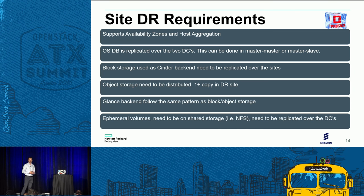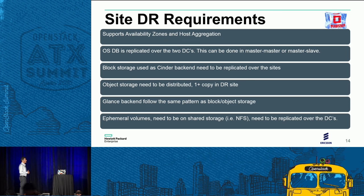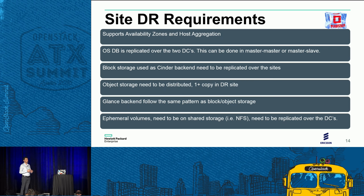The biggest problem is the replication of data. Without having the data in the DR data center, it is almost impossible to restart the workload there. The three main kinds of data that need to be replicated are: the database used by OpenStack — for example MySQL, where it is possible to have a distributed cluster depending on network delay, in either master-master or master-slave mode.